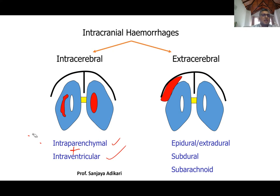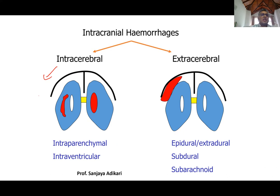Intracerebral hemorrhage comes under strokes. One type of stroke is ischemic stroke — not having blood supply. The other is hemorrhagic stroke, meaning bleeding. This intra-parenchymal type is a form of hemorrhagic stroke. We will not discuss it further here, as it is a separate topic.